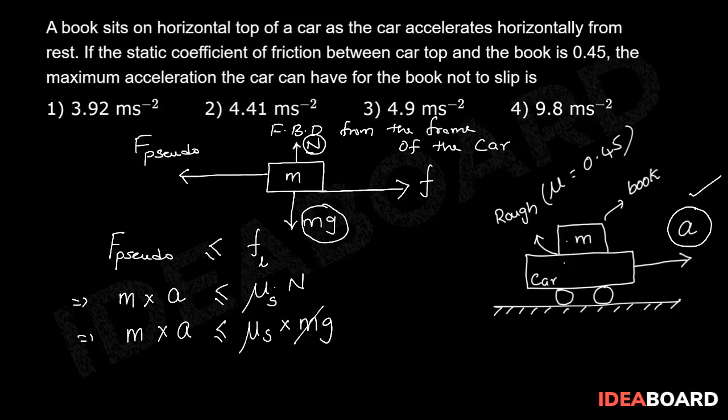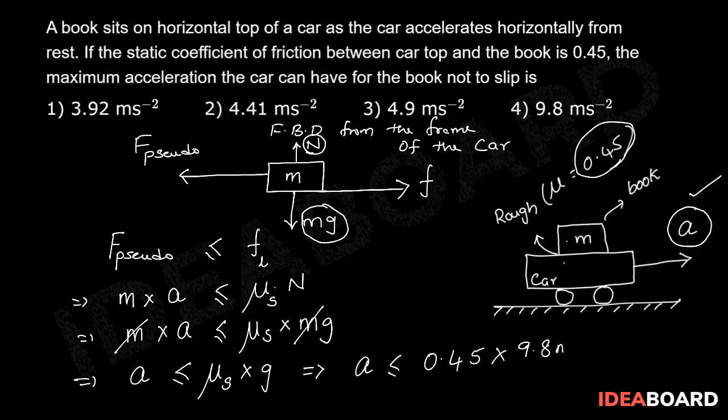M on either side gets cancelled out. A is less than or equal to mu s times g. This implies acceleration is less than or equal to mu s is given as 0.45, it is 0.45 times 9.8 meter per second square. This implies A is less than or equal to 4.41 meter per second square.